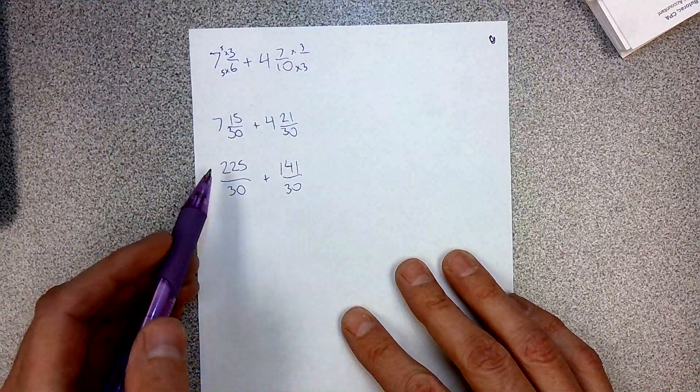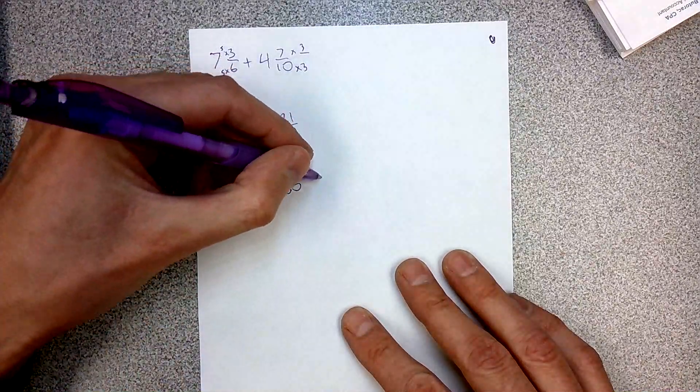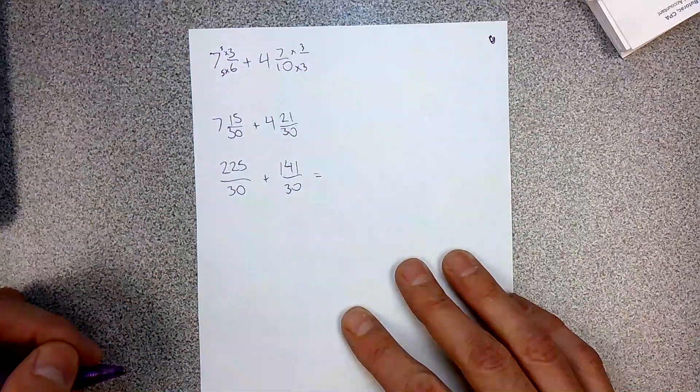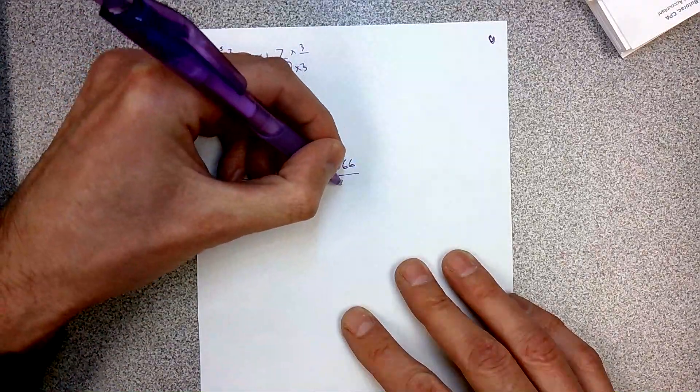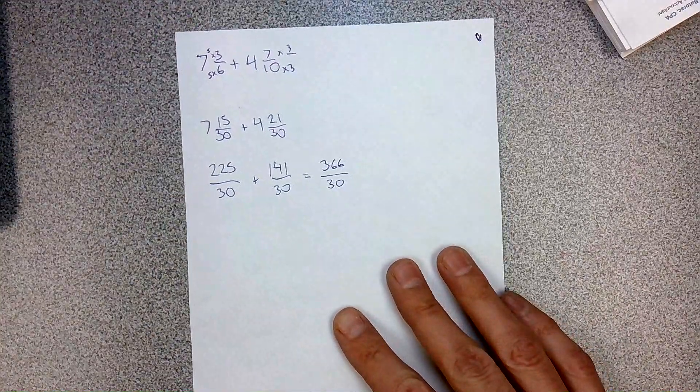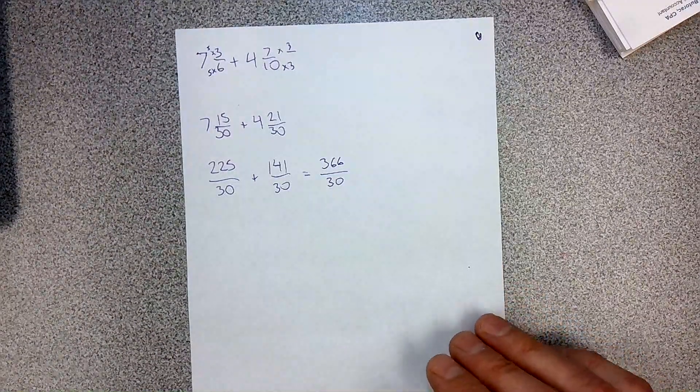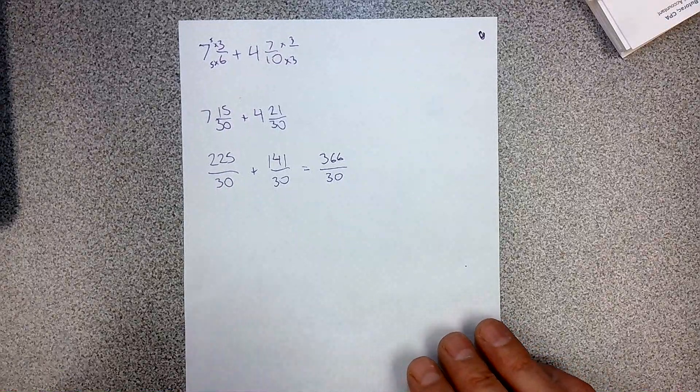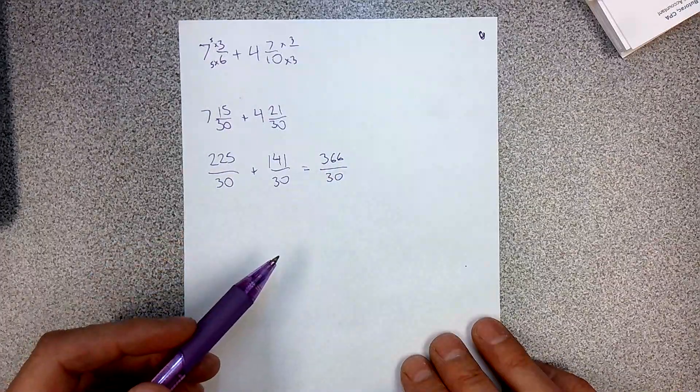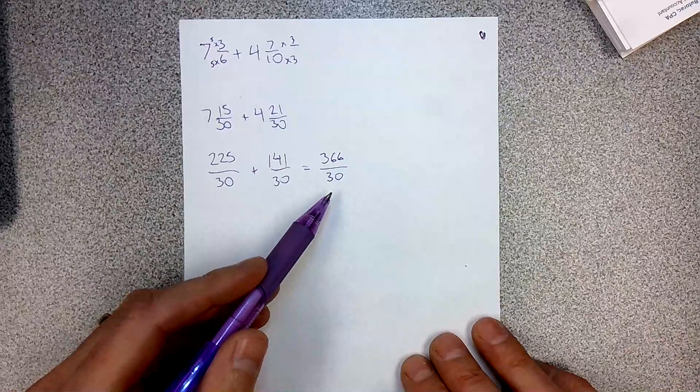I have common denominators. I can add the numerators together and I get 366 30ths. Now, you could change that back to a mixed number. Remember, you don't have to, you can leave it improper for me, but you do need to reduce.